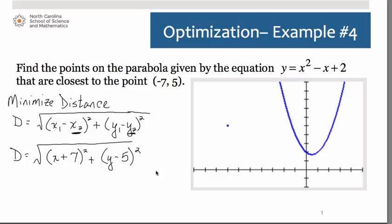We do need to eliminate one of these variables, and the way in which we can do that is to make use of the equation we were given, the y equals x squared minus x plus 2. We're going to substitute that in place of our y right here, and then we'll be able to simplify it down to one variable.